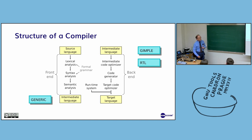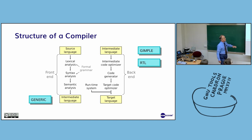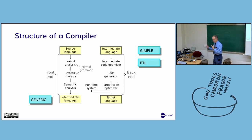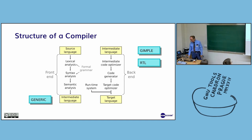In terms of GCC, it has a number of intermediate languages: Generic, Gimple, and RTL. Different intermediate languages have different advantages and are open to different optimizations.